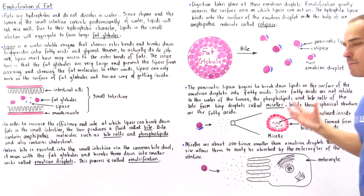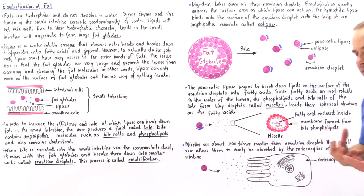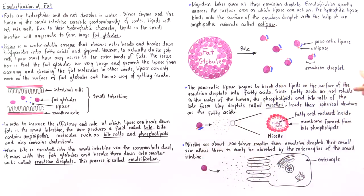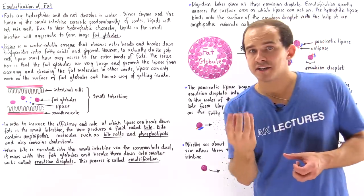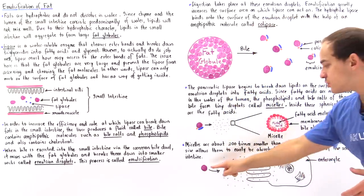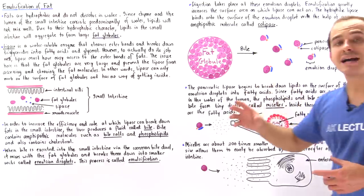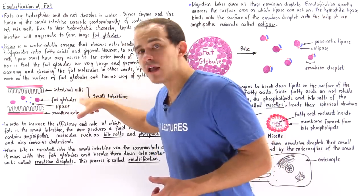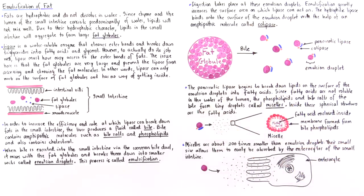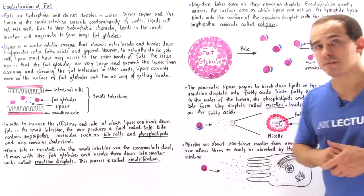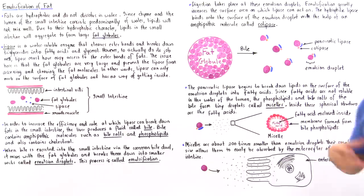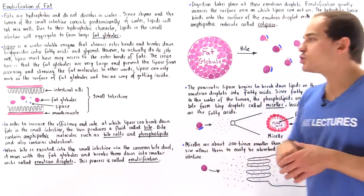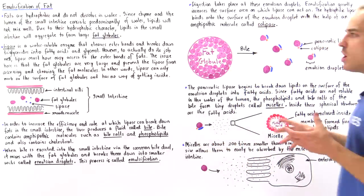What is significant about micelles? Micelles are 200 times smaller than emulsion droplets. This allows these very tiny micelles to get very close to the membrane, bind to the membrane of the enterocyte found on the villi, and allow fatty acids to enter the cytoplasm of the cell. Ultimately, the cell transports the fatty acid into the lacteal, which connects to our lymphatic system.